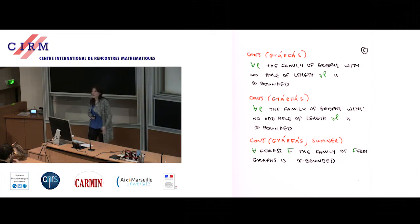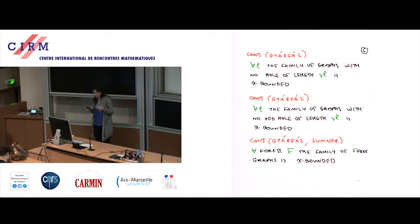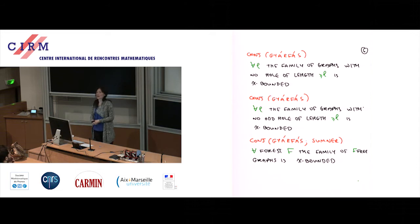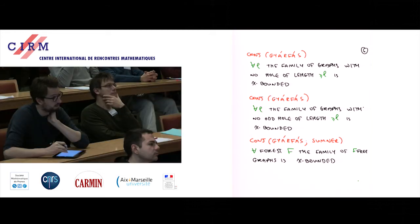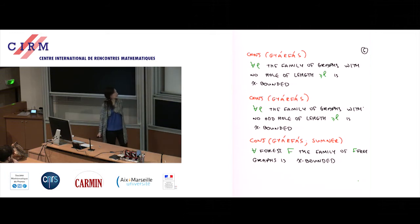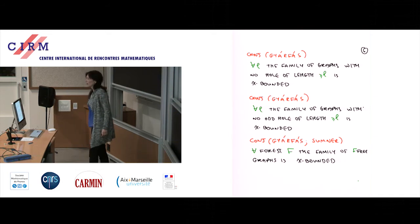Gyárfás has another conjecture — independently also due to Sumner — that for every forest, if you exclude it as an induced subgraph, you get a chi-bounded family. By Erdős's theorem, any excluded graph that gives a chi-bounded family must be a forest, and this conjecture is the converse. It's wide open with very little known. But I only mention it because it's in the same direction; I won't say anything further about it.